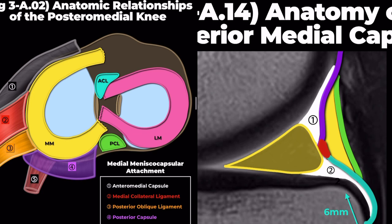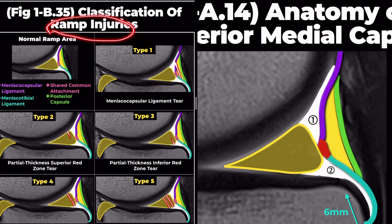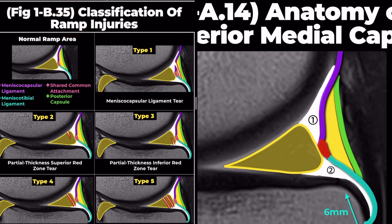Contrasting with the lateral meniscus, the medial meniscus shows less mobility due to its strong peripheral attachments, especially on the medial and posterior sides. A ramp tear is characterized as a longitudinal tear at the medial meniscus posterior horn involving the periphery at or near the meniscocapsular junction. Untreated ramp tears are often associated with unfavorable outcomes such as accelerated cartilage degeneration.